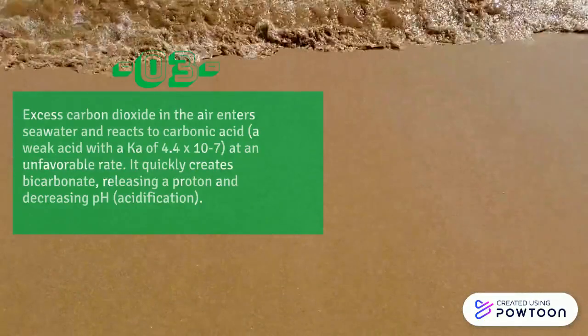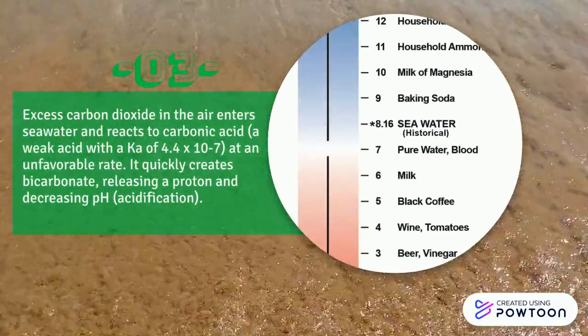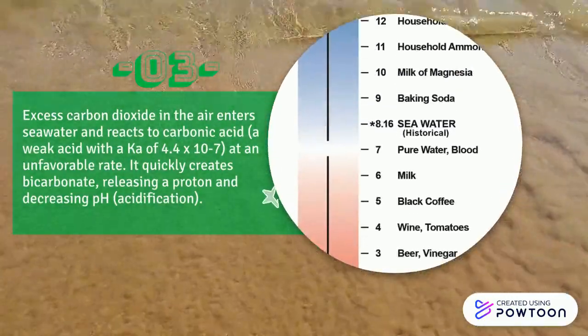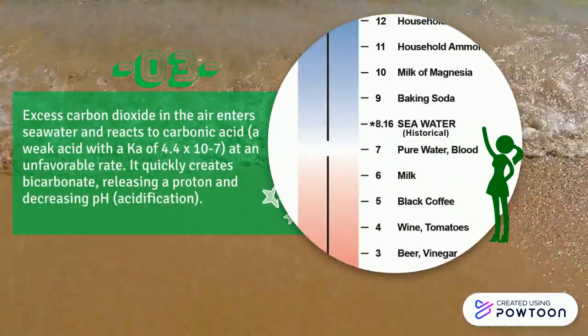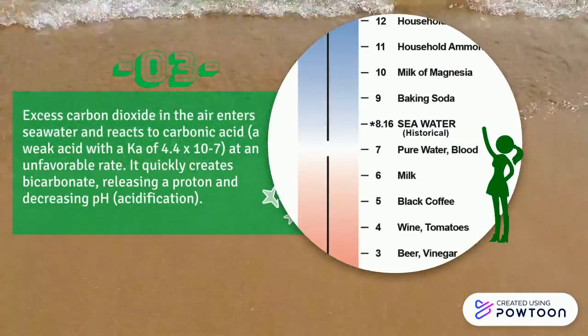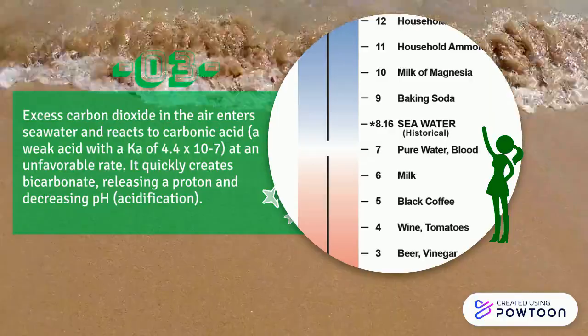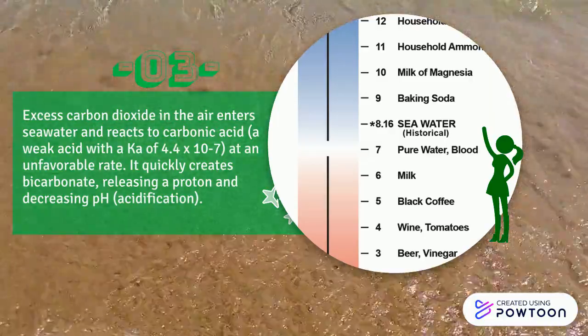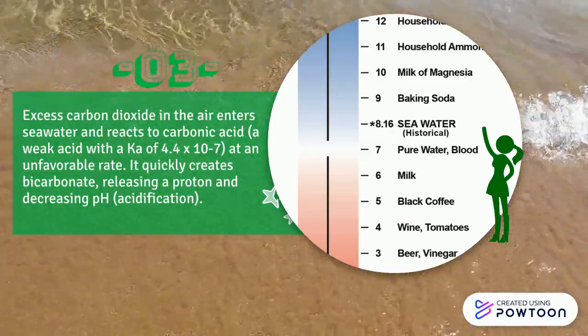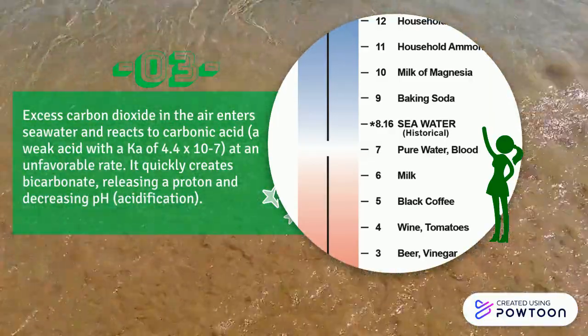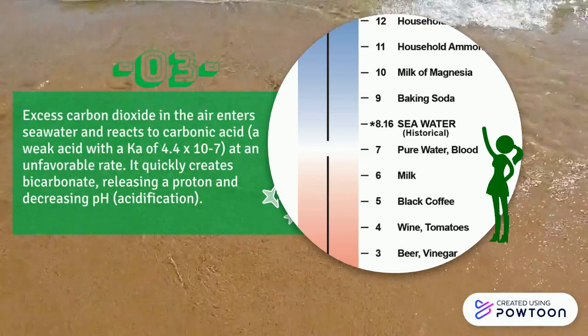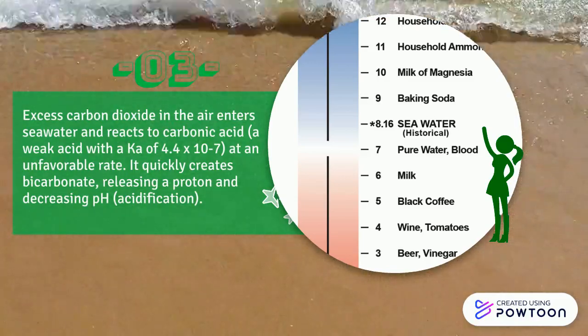Excess carbon dioxide in the air enters seawater and reacts to form carbonic acid, a weak acid. It quickly creates bicarbonate, releasing a proton, decreasing pH — ocean acidification.